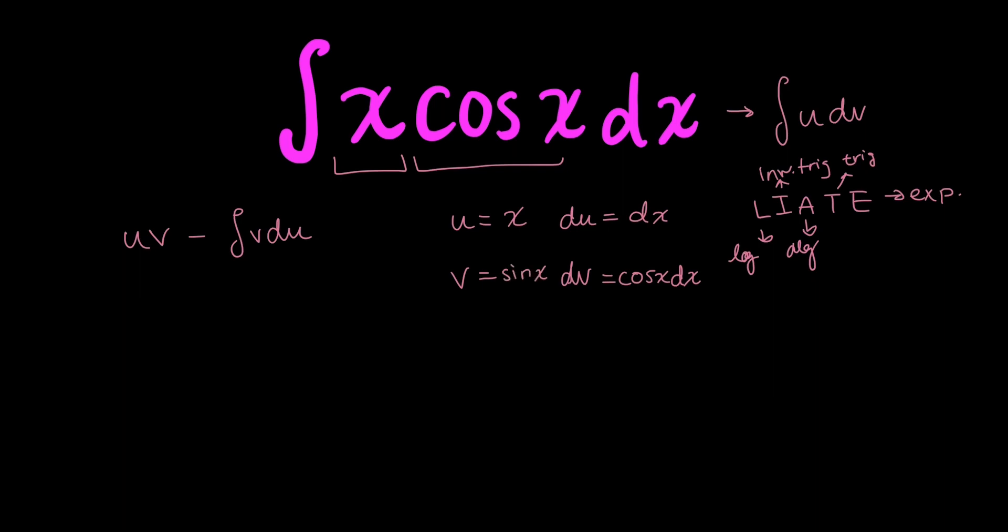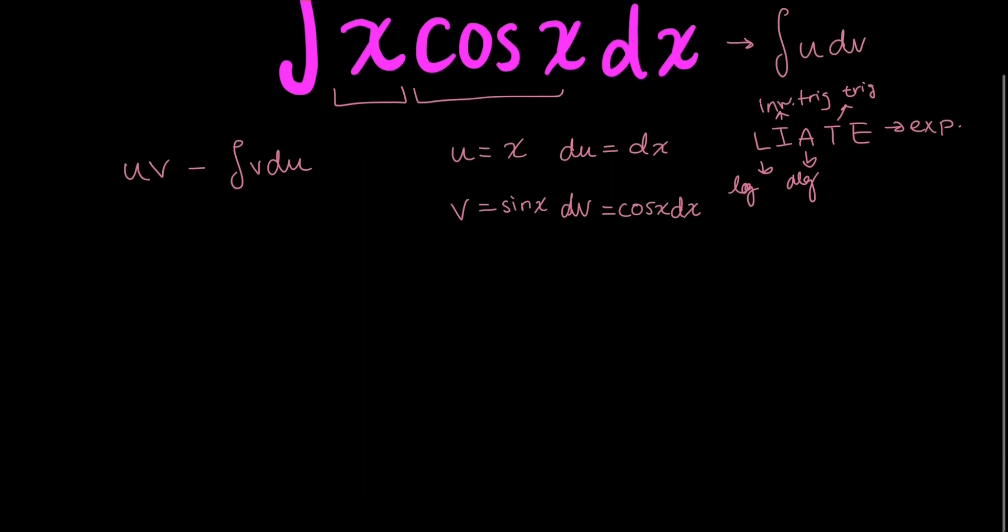You could also think, what function gives me the derivative cosine x? Either way, we can plug this into our formula now. So u is equal to x times v, which is equal to sine x, minus the integral of v, which is sine x, times du. In this case du is just dx, so I'll plug that in.